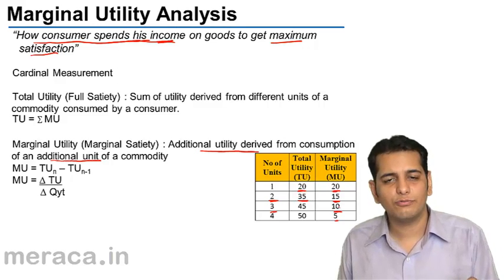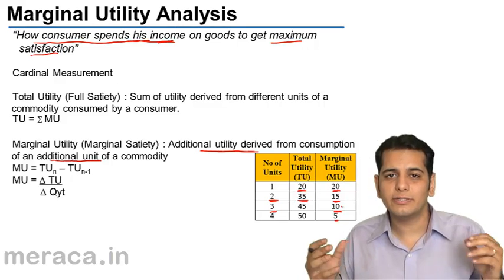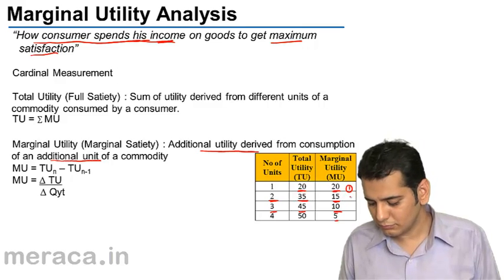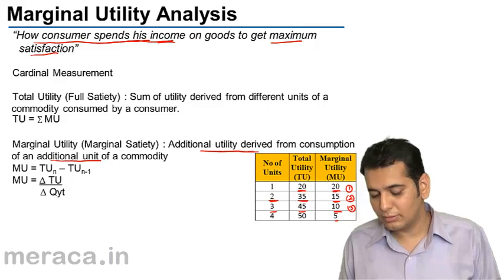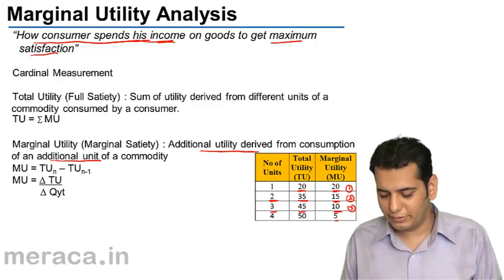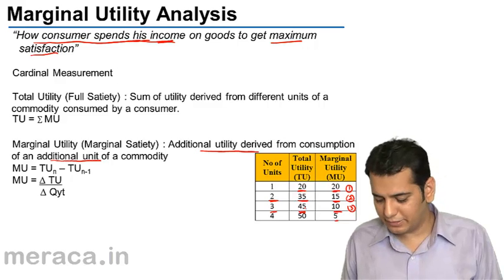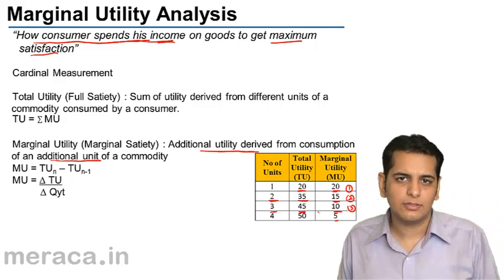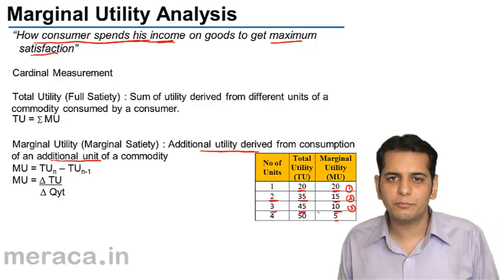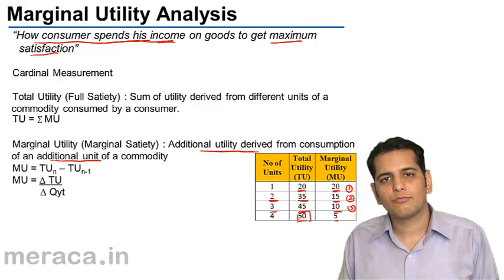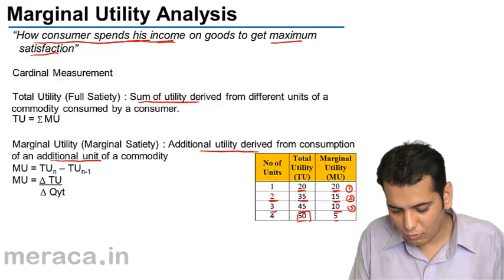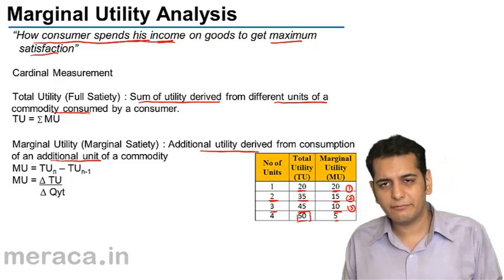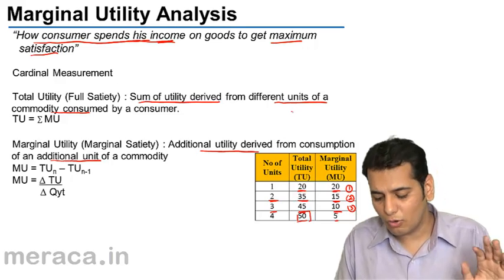When you consume the third ice cream, you derive a satisfaction level of 10. The total utility derived till the end of the third consumption is 45 — 20 from the first, 15 from the second, 10 from the third — adding all three gives 45. When you consume the fourth commodity and get a utility of 5, you add this to your earlier total utility, making your total utility 50. So, total utility is the sum of utility derived from all units of the commodity consumed.